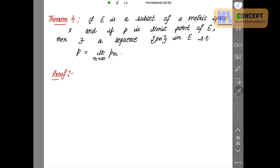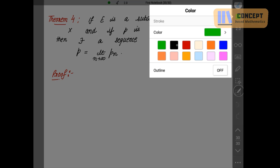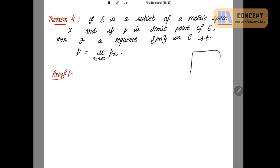Theorem 4: If E is a subset of a metric space X and P is a limit point of E, then there exists a sequence pn in E such that P equals the limit as n tends to infinity of pn. We visualize the metric space X with subset E inside it. The limit point P can exist on the boundary, inside E, or outside E. There exists a sequence pn in E such that pn converges to P.